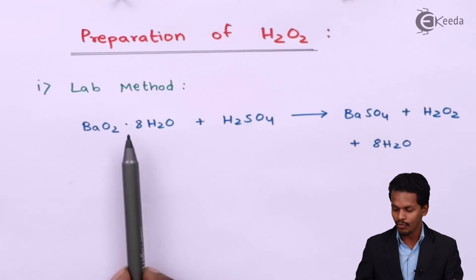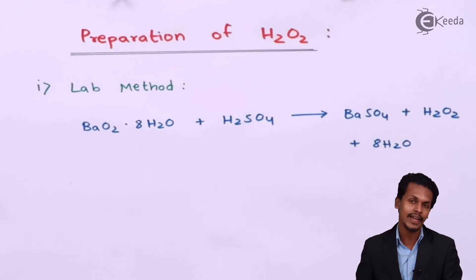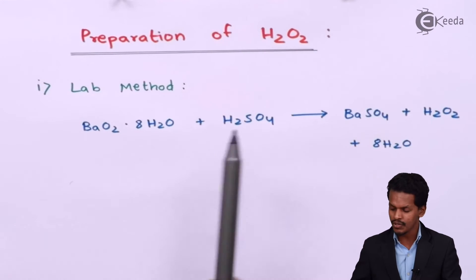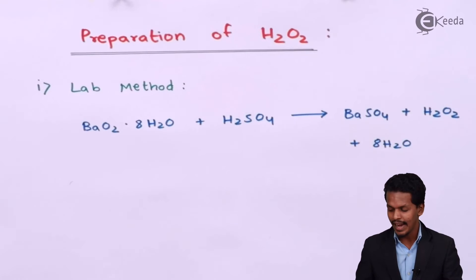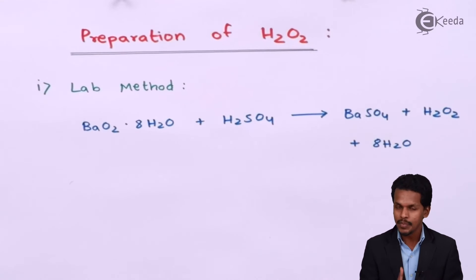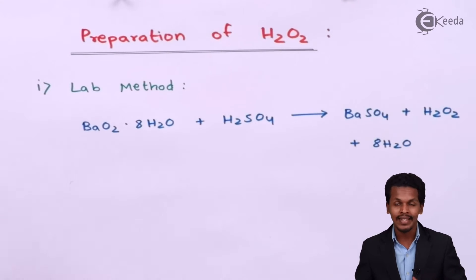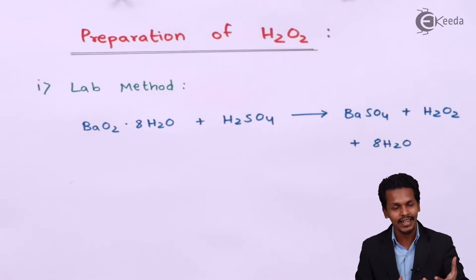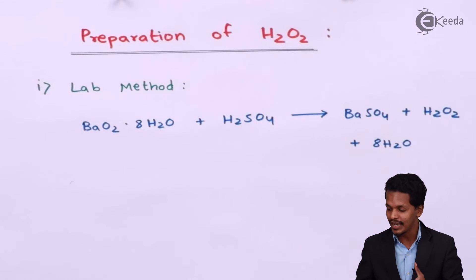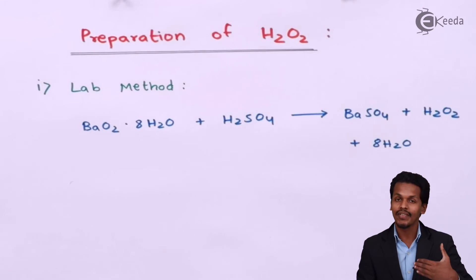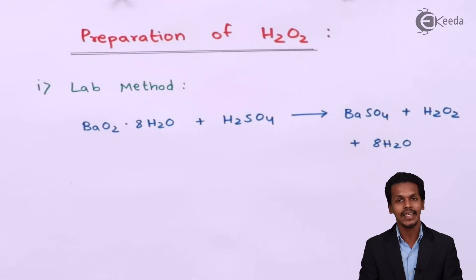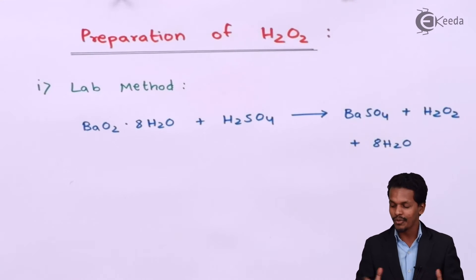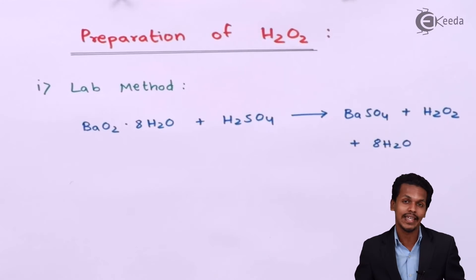We must use hydrated barium peroxide because if we use anhydrous BaO2, the BaSO4 precipitate that forms will cover the BaO2 surface, adding a protective layer. This prevents the remaining unreacted BaO2 from reacting with H2SO4 to yield H2O2. Therefore, anhydrous BaO2 would retard or slow down the reaction. That is why we use hydrated BaO2 to successfully obtain hydrogen peroxide.